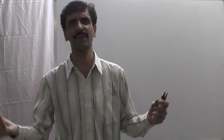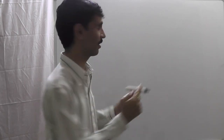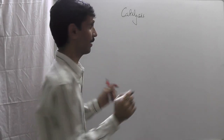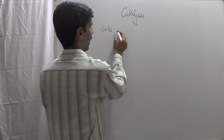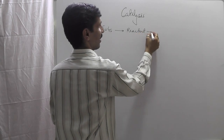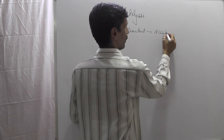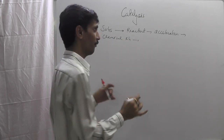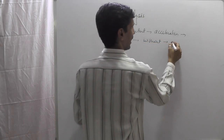Starting with the topic of catalysis, I will be discussing the entire chapter in terms of the major concepts which need to be taken care of. I will be dividing this chapter into various segments as per its importance. Now, what exactly do we mean by catalysis? It's a term heard for a long time, but we have to start with the basics. Catalysis is basically a substance added to a reactant such that it results in the acceleration — speeding up — of a chemical reaction without itself undergoing any chemical change.